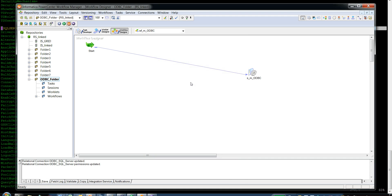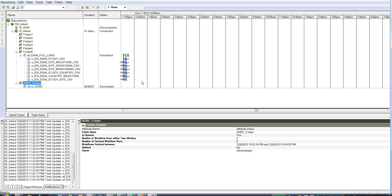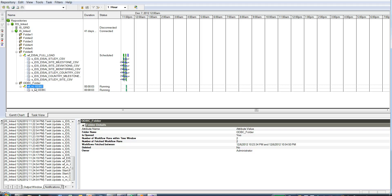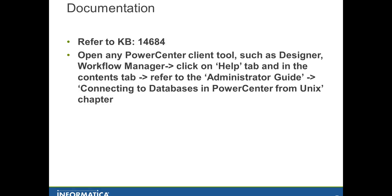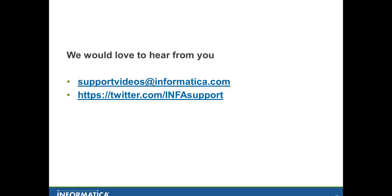After this configuration, I am running the session. The session is currently running — this is the workflow I have for the session reading from SQL Server — and as you can see, it has succeeded. That brings the demo to a conclusion. If you need to refer to any documentation, you can log into the Informatica portal and refer to knowledge base article number 14684, which provides the steps to configure ODBC connectivity. Or you can open any PowerCenter client such as Designer, click on the Help tab, go to the Contents tab, refer to the Administrator Guide, and refer to the sub-chapter called 'Connecting to Databases in PowerCenter from Unix'. I hope this demo was useful and we would love to hear back from you with any suggestions and inputs. Thank you very much for your time.